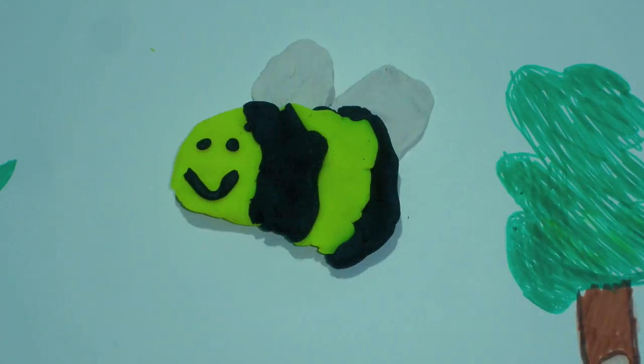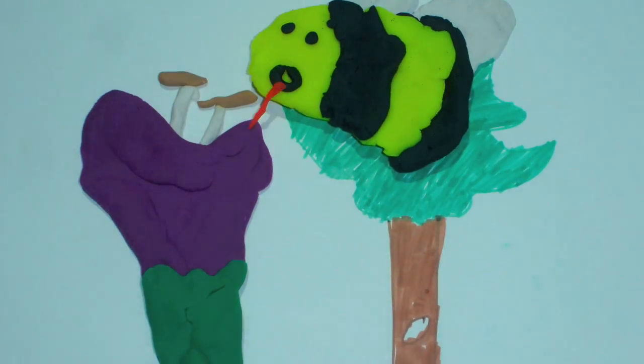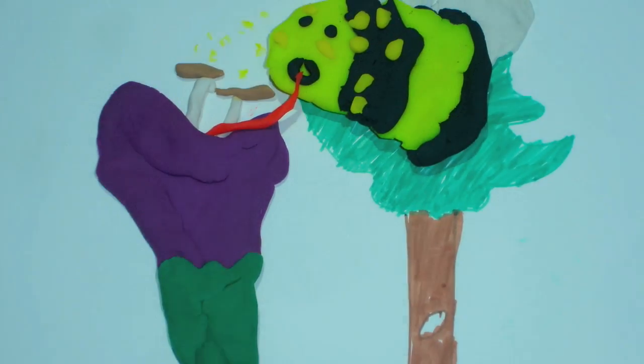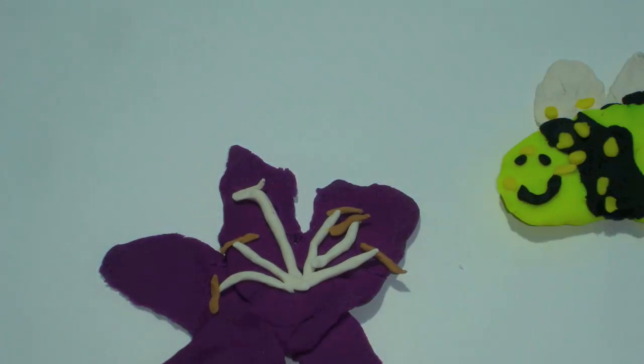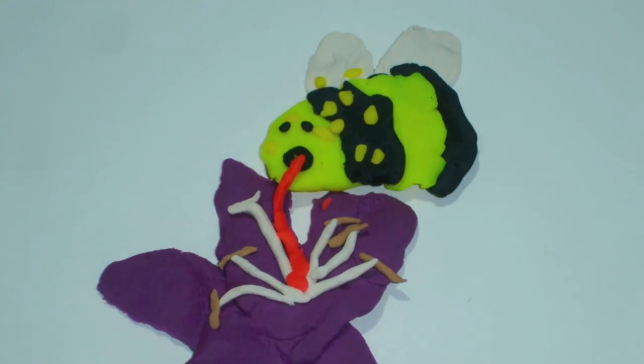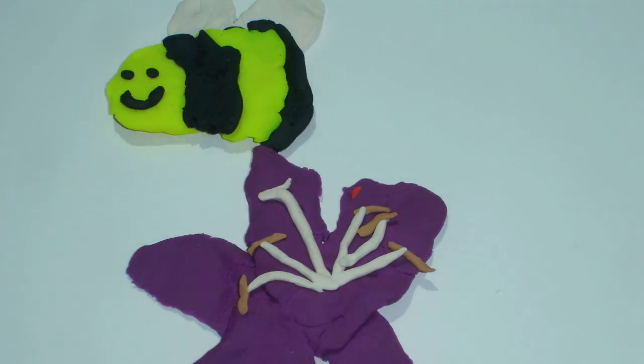This is Apis mellifera in action. As Apis mellifera sucks down the nectar, the pollen sticks to its body. As it drinks nectar from another flower, the pollen goes onto the pistil of the flower. Yummy yummy!